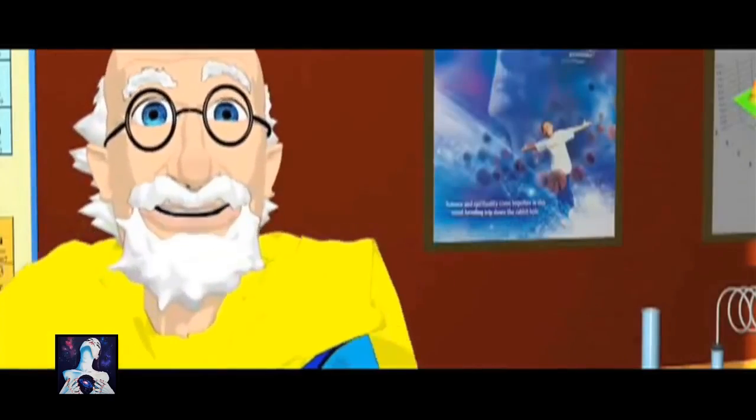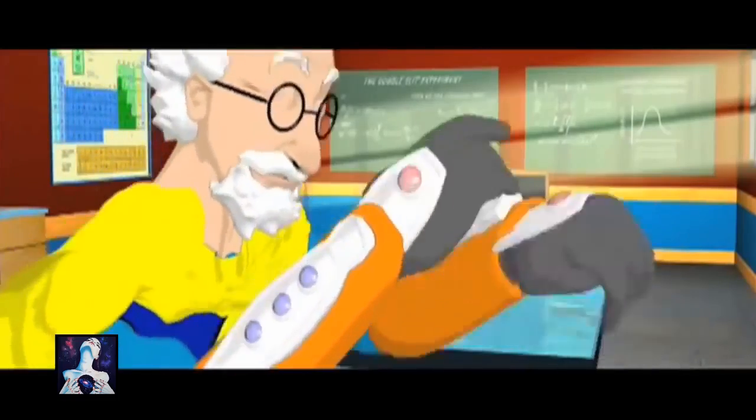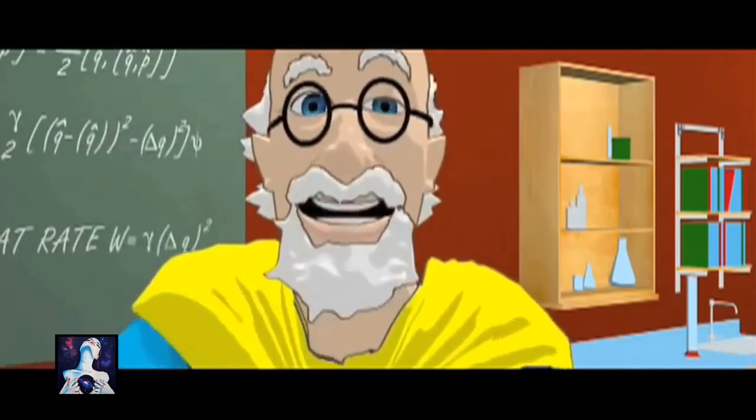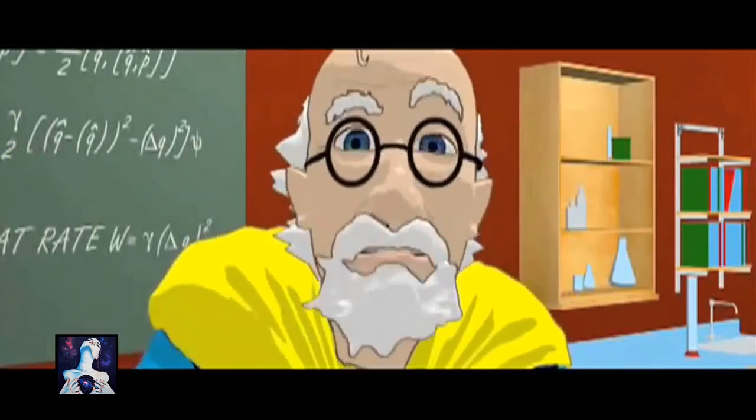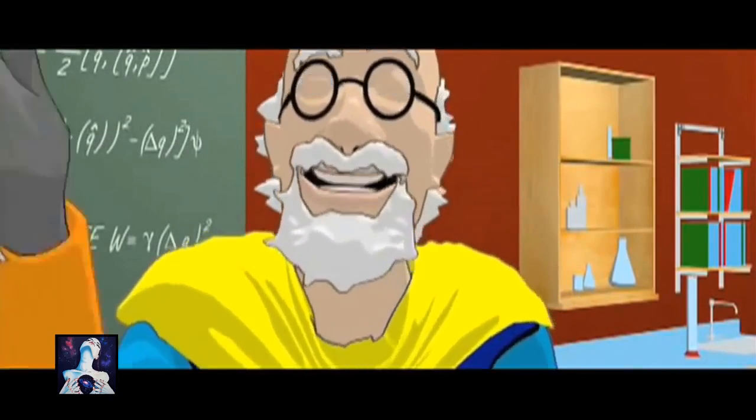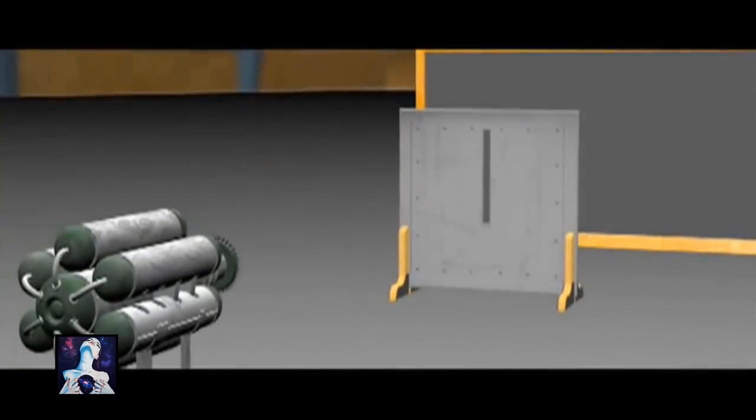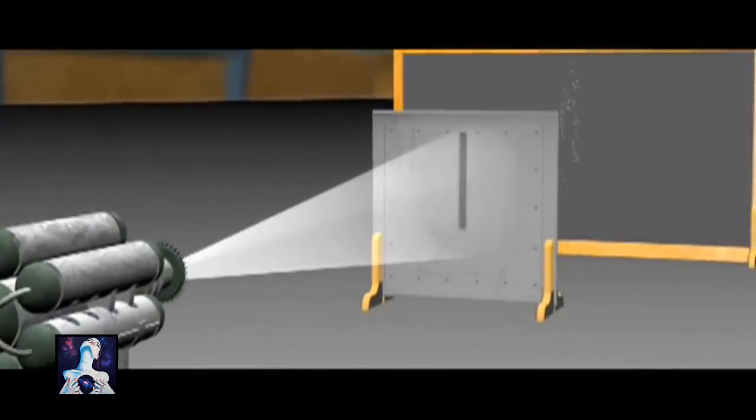Now, let's go quantum. An electron is a tiny, tiny bit of matter, like a tiny marble. Let's fire a stream through one slit. It behaves just like the marble. A single band.